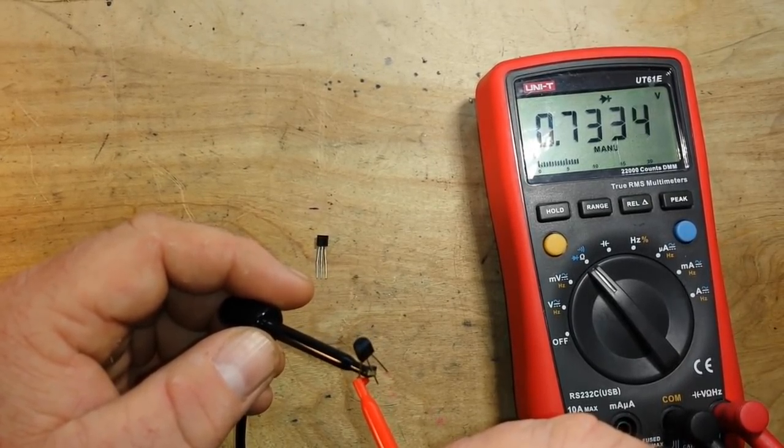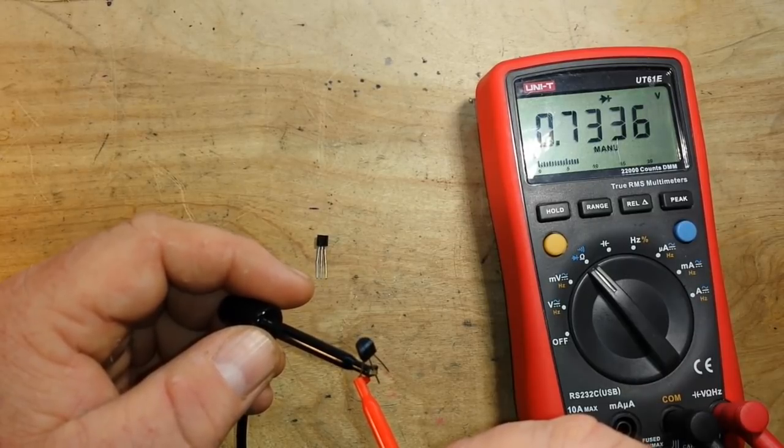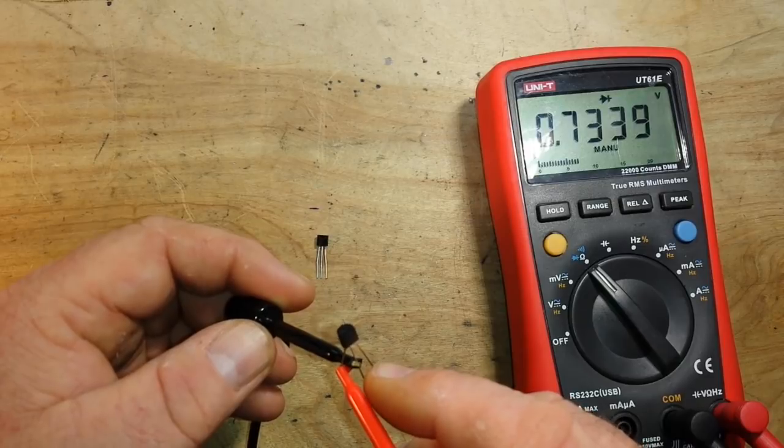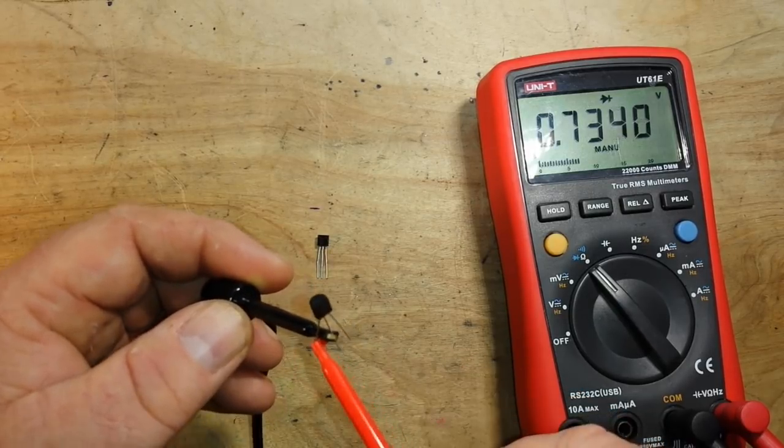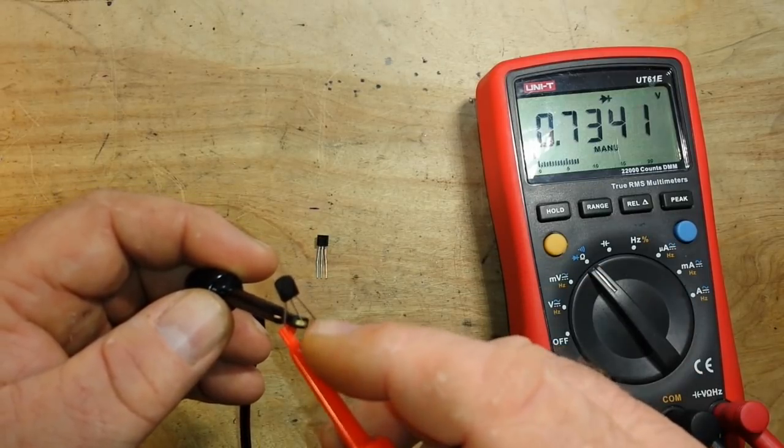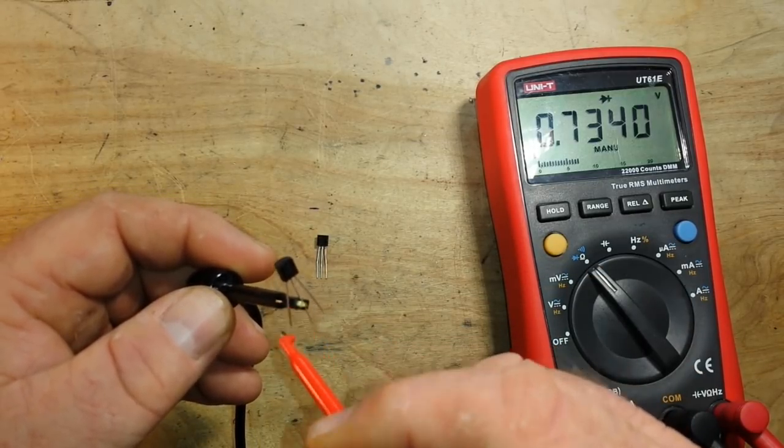The base-emitter junction will always be a little bit stronger than the base-collector junction. So, we now know that since this middle lead was common to both of these, that's your base. And because this was stronger, looks 0.734,